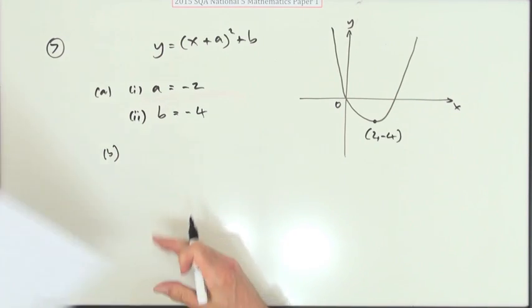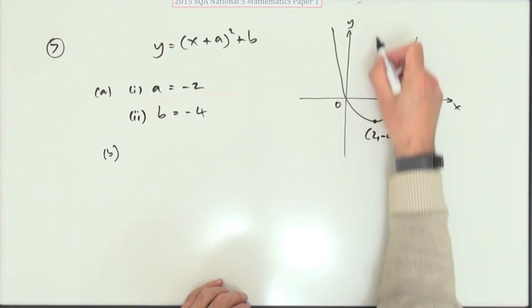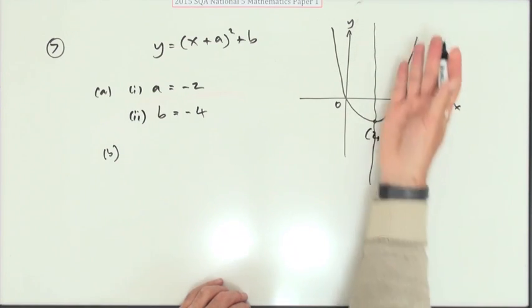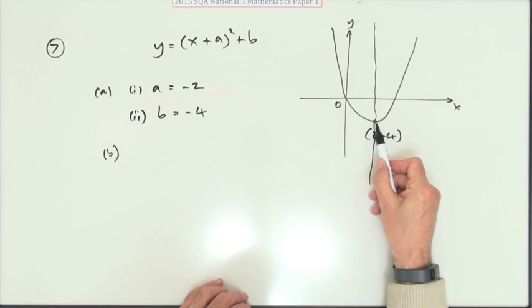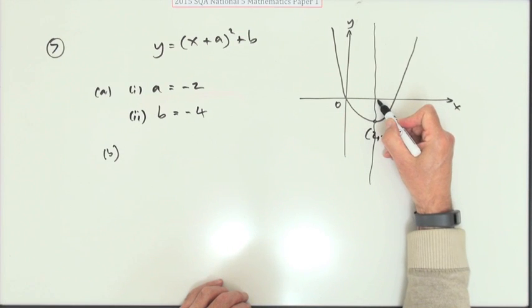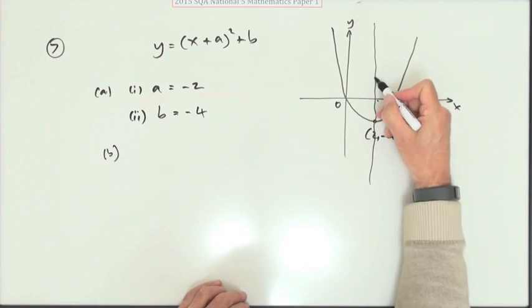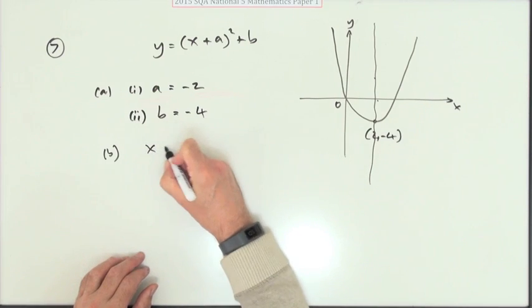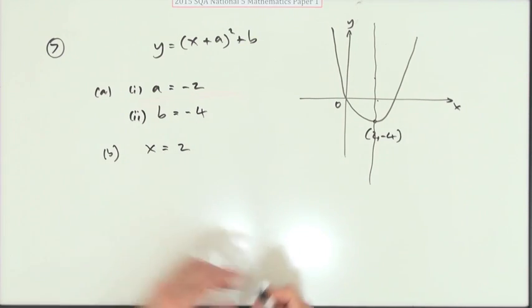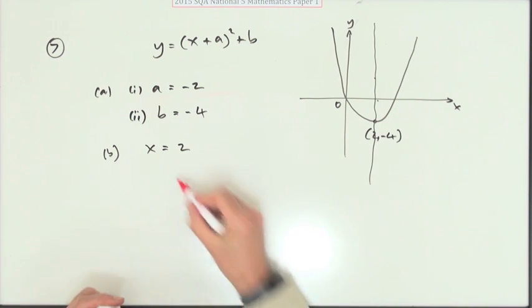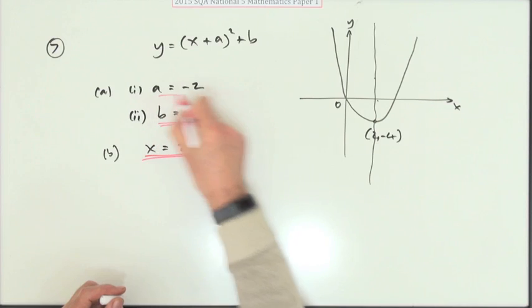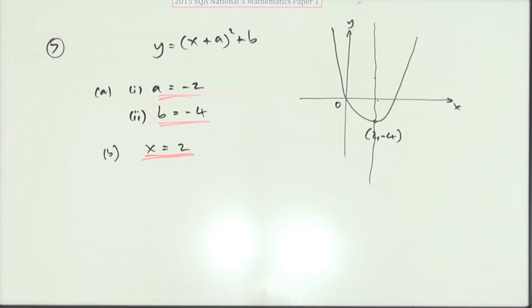Now what's b? Is this going to be harder? Equation of the axis of symmetry. Well it's symmetrical down here. It's the same on either side. It must pass through the turning point since there's only one turning point. Cuts the x-axis at 2. Every point in that line has got an x-coordinate of 2. That's the equation of the axis of symmetry. Easy.